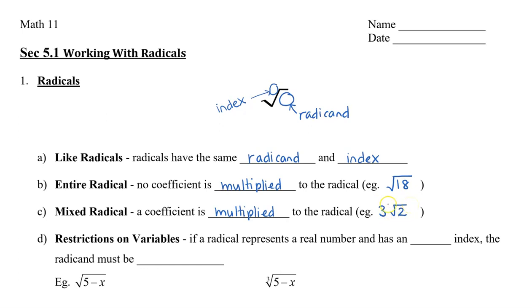Now when it is 3 times root 2, we don't tend to put a times symbol — we just put 3 and then root 2. Now we need to look at restrictions on the variables because when we square root or fourth root, there are some restrictions.